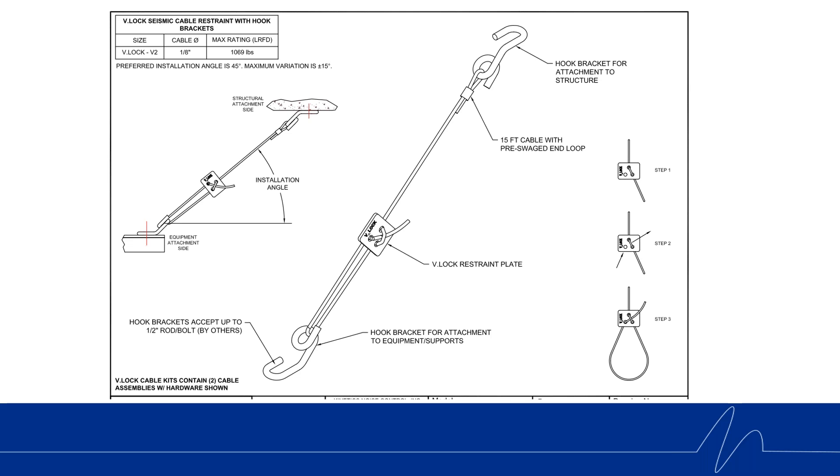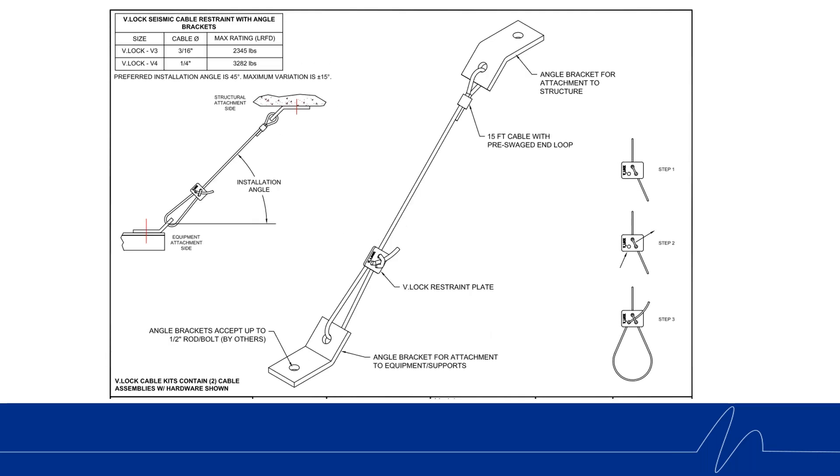So here's a look at our 1/8 inch cable kit. This will come with 15 feet of cable. It will come with two hook brackets. I'll show how those work here in a minute. And the V-Lock plate. The V-Lock plate will be in line with the cable kit and easily installed. But the 3/16 cable and the quarter inch cable, we are going to be offering an angle bracket, which is very similar to our current kit offering that we have currently with QuakeLock.